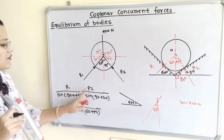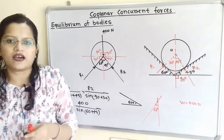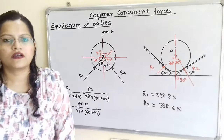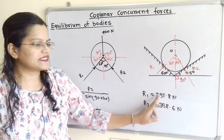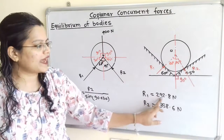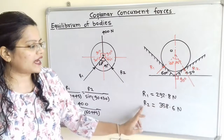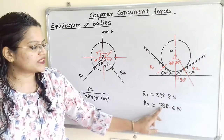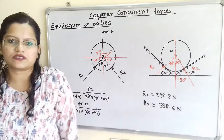When we calculate, R1 is equal to 292.8 N and R2 is equal to 358.6 N. Thank you.